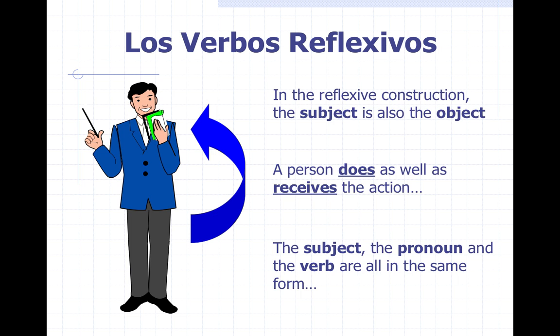So, how do we know whether they're reflexive or not? The reflexive construction is going to be the subject being also the object. It also means that a person does as well as receives the action. And the subject, the pronoun, and the verb are all in the same form. So, let's find out how we do this.